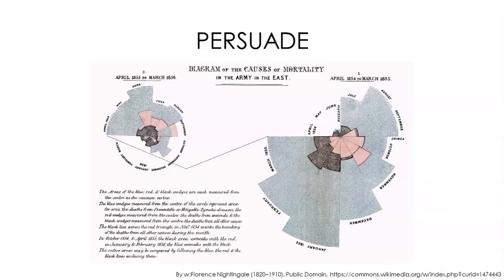She then goes on to explain the few months where wedges coincide — for example, the black wedge and the red wedge in October 1854. Florence Nightingale is credited with professionalizing nursing, as well as pioneering the field of biostatistics.